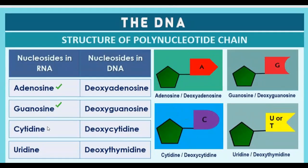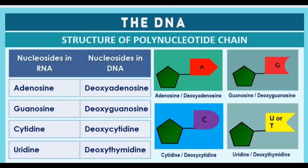The nucleosides in RNA are: adenosine, guanosine, cytidine, and uridine. In DNA the nucleosides are: deoxyadenosine, deoxyguanosine, deoxycytidine, and deoxythymidine — because in DNA thymine replaces uracil. In the diagram you can see the pentose sugar paired with adenine, guanine, cytosine, and uracil or thymine as the nitrogenous bases. Uracil is present in RNA whereas thymine is present in DNA.